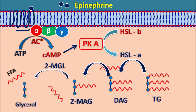Hormone sensitive lipase A is activated by protein kinase A, and protein kinase A is sensitive towards cyclic AMP. In this way, hormones like epinephrine and glucagon can stimulate the adenylyl cyclase system and increase intracellular cyclic AMP levels, which increases lipolysis.